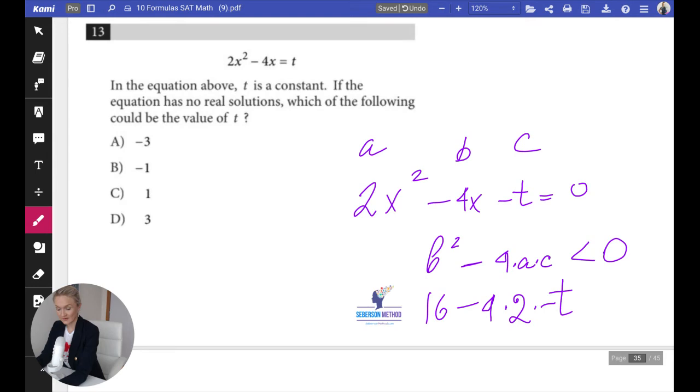If you're multiplying by negative t, then you're going to have an addition. So 16 + 8t has to be less than zero. How is it possible? Only if t is negative 3. Then you can just quickly look at your answer choices and see that only if t is negative 3, then you're going to get a negative number for the discriminant.